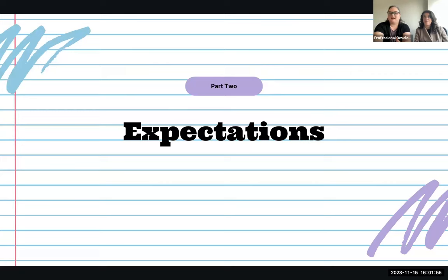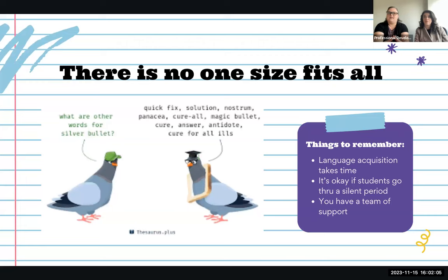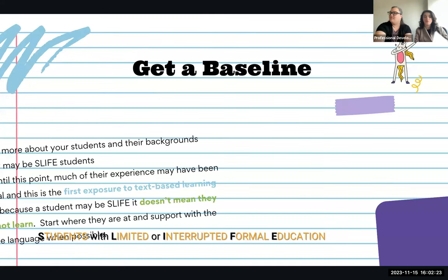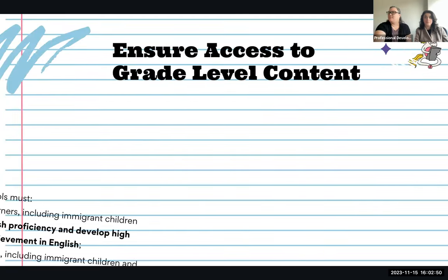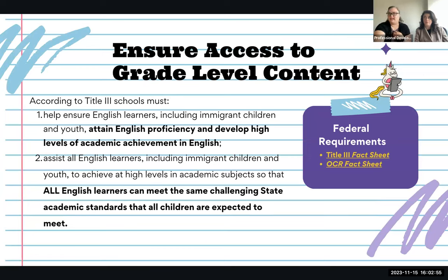The first thing was: thank you for wanting to support your ML students. The second thing we went over was expectations — managing our expectations for ourselves, understanding that our ML students come to us at all different levels and with all different experiences. We want to honor those experiences and help them feel like they belong. Amy talked about SLIFE students — students with limited or interrupted formal education — and the importance of getting a baseline of their experiences and the assets they bring. There are great resources linked in our presentation.